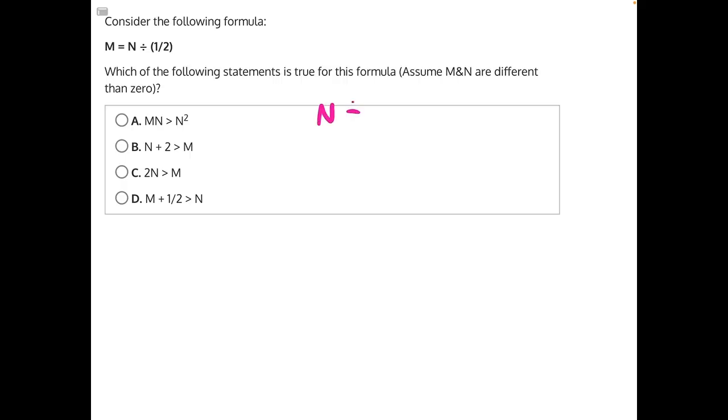So, N divided by 1 half. Remember that dividing with fractions is the same thing as multiplying by the reciprocal, or by the flip of that fraction. So if we flip the numerator and denominator, we would get 2 over 1, or N times 2, which is 2N.